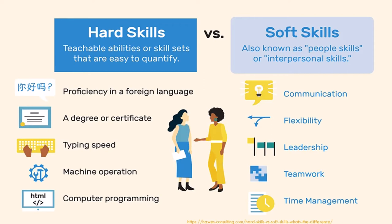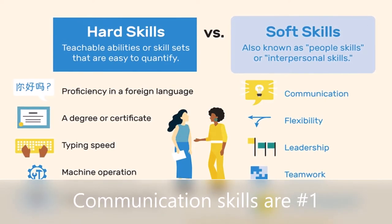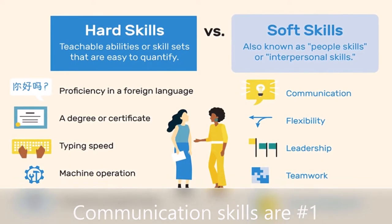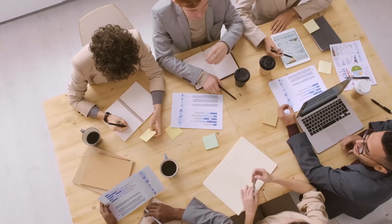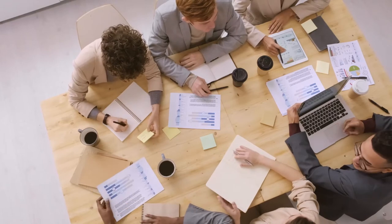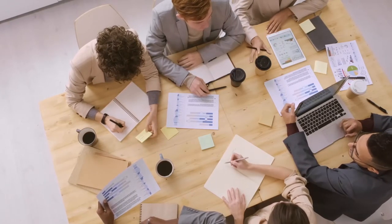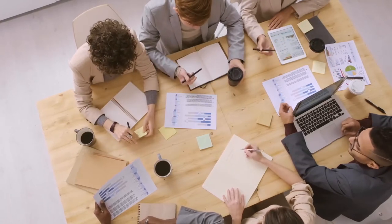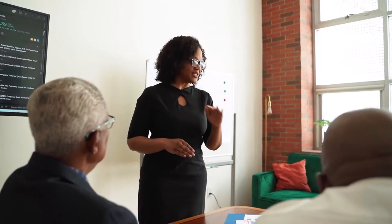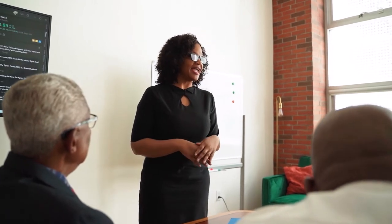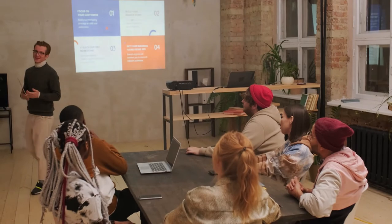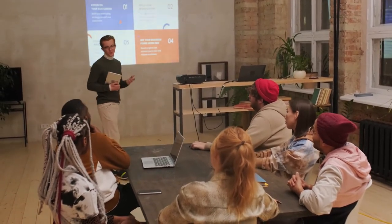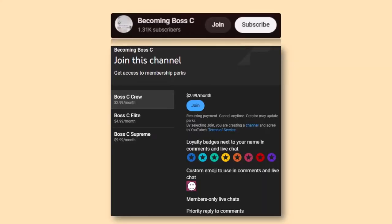Communication skills are considered the number one most valuable skill that internal auditors at all levels need. Staff auditors communicate when writing audit reports and documenting procedures. Audit supervisors communicate when giving instructions and discussing findings with clients. The chief audit executive communicates when presenting to the board of directors or audit committee and communicating expectations in the internal audit charter. Communication skills are highly coveted and very valuable for internal auditors at any level.